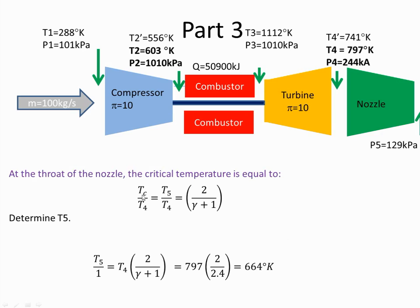At choking we can calculate the critical temperature using this formula, and again plugging in the values I work out the critical temperature which is 664 degrees Kelvin. I've used the real T4. So that's what you would use, not the ideal. You would use the real T4.